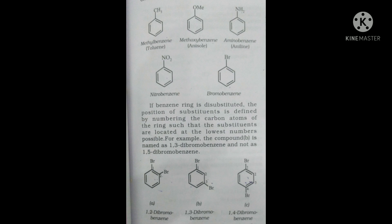Next is the nomenclature of substituted benzene compounds. When any group is attached to benzene, we use 'benzene' as the root word. For example, a methyl group attached to benzene is called methylbenzene, commonly known as toluene.